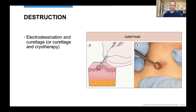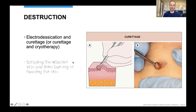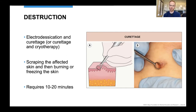Destructive methods — the terminology you'll hear is electrodesiccation and curettage, or curettage and cryotherapy. The curettage involves taking an instrument called a curette and, after the skin has been numbed, scraping away the skin cancer. Then we either apply heat — the electrodesiccation — or a cold spray — the cryotherapy — for a couple of rounds. It usually takes about 10 to 20 minutes. For many types of skin cancer, this is a very appropriate and effective treatment, often with a 90 to 95% cure rate, as long as it's used on the right type of skin cancer and in the right location.